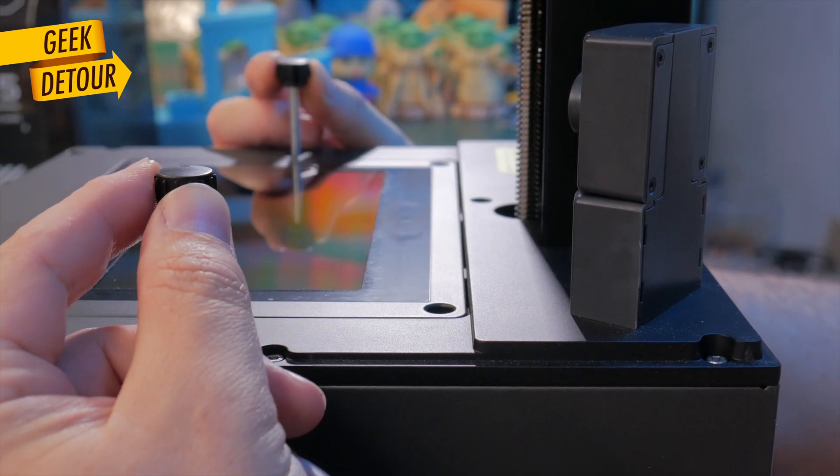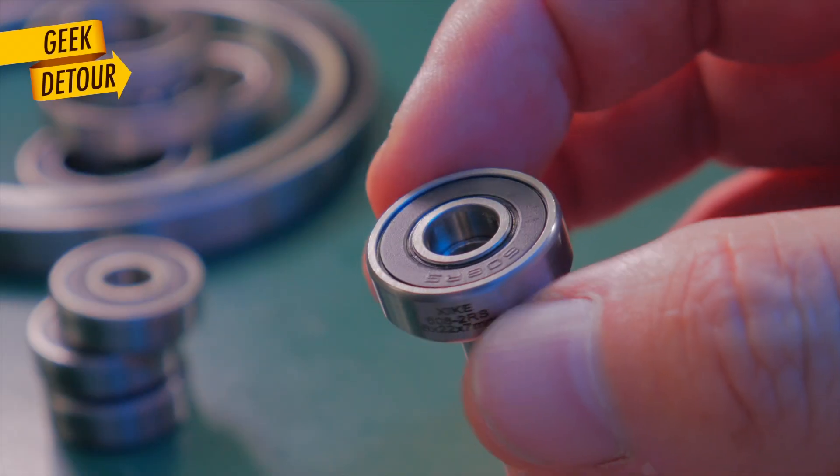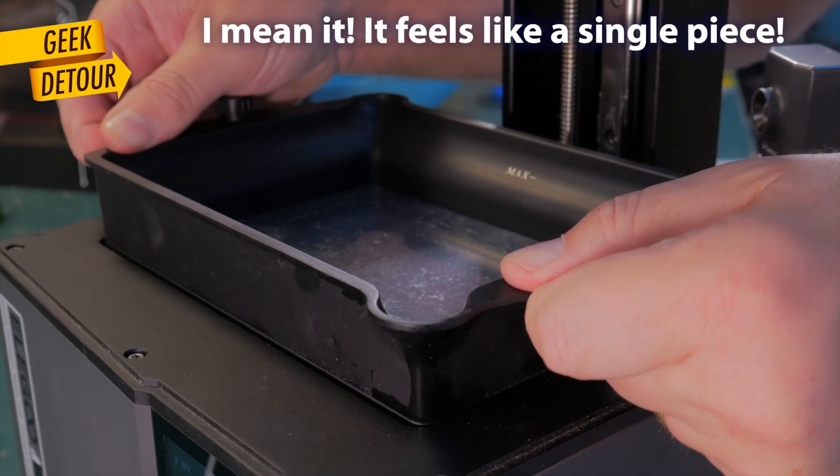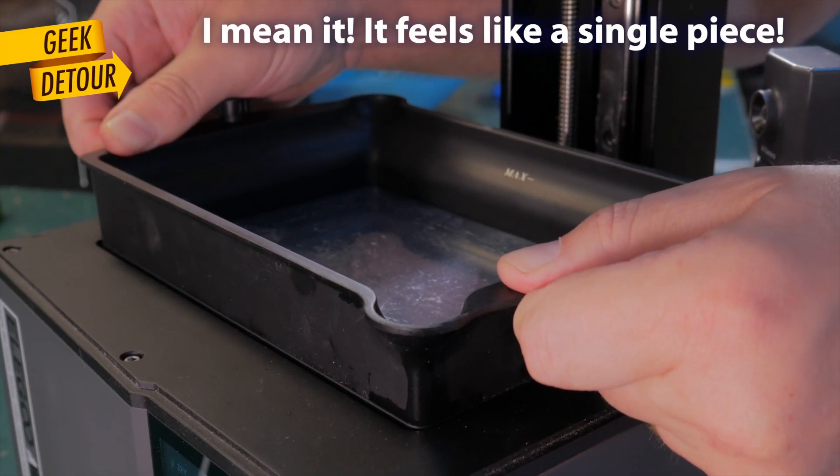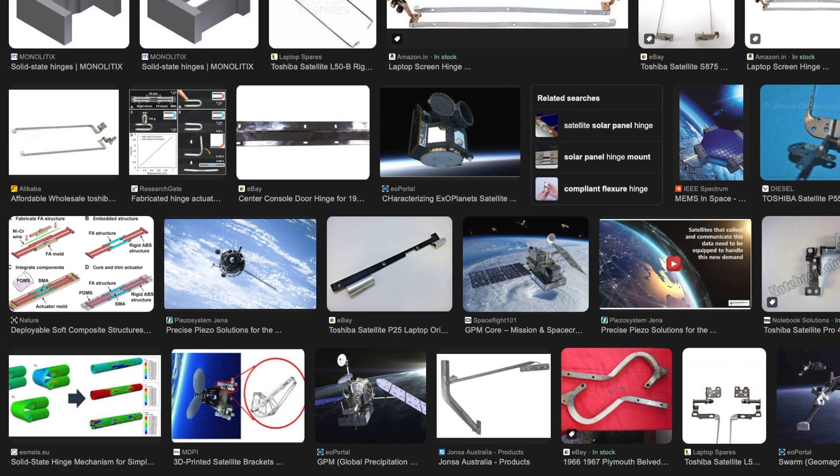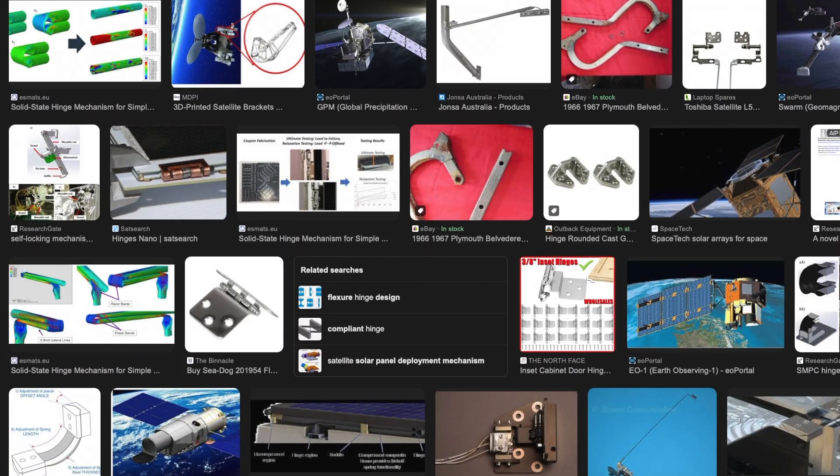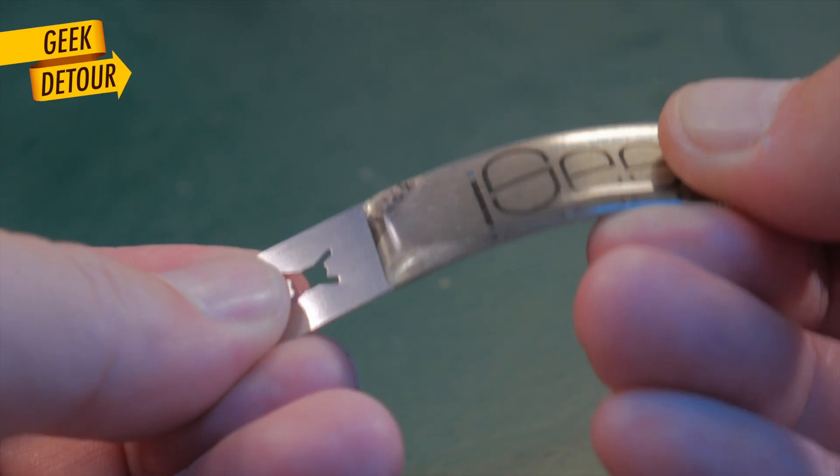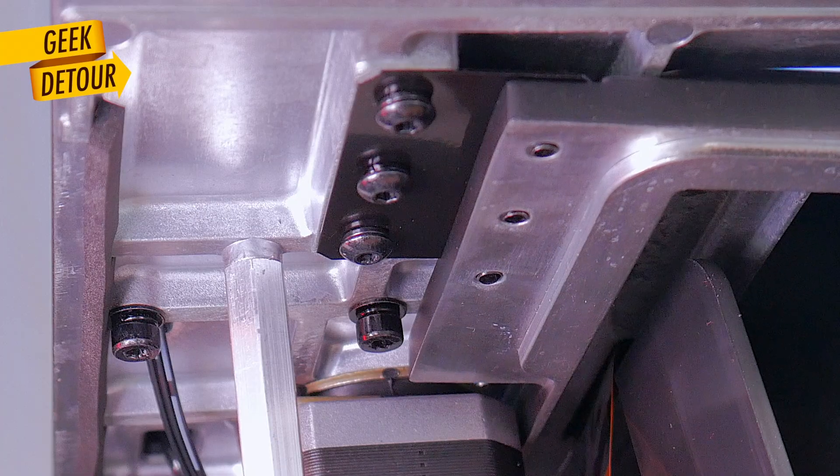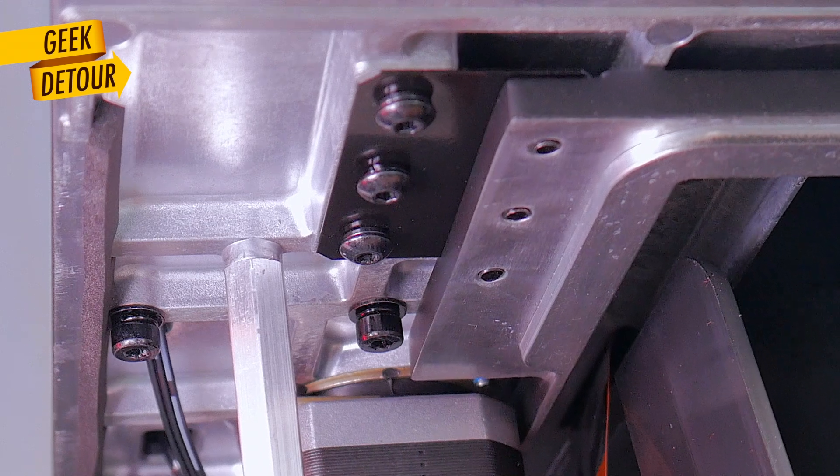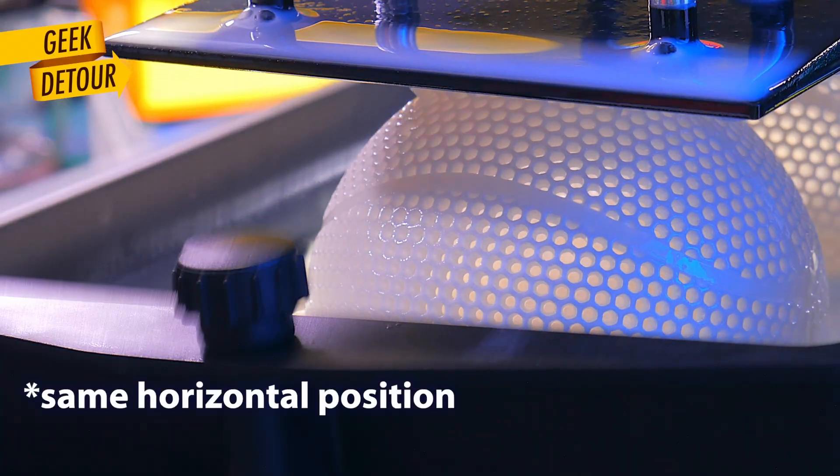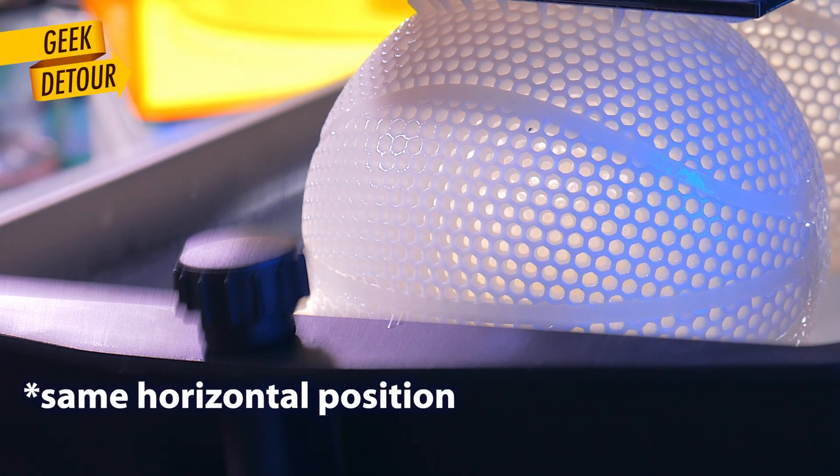But how does it pivot? I mean, hinges have play, ball bearings have play. This doesn't have any sideways movement. How is it done? I was expecting something exotic, but it is a pair of metal springs, like this, made of steel. It is a solid state hinge, it doesn't need to flex much and it always keeps the screen on the same position.